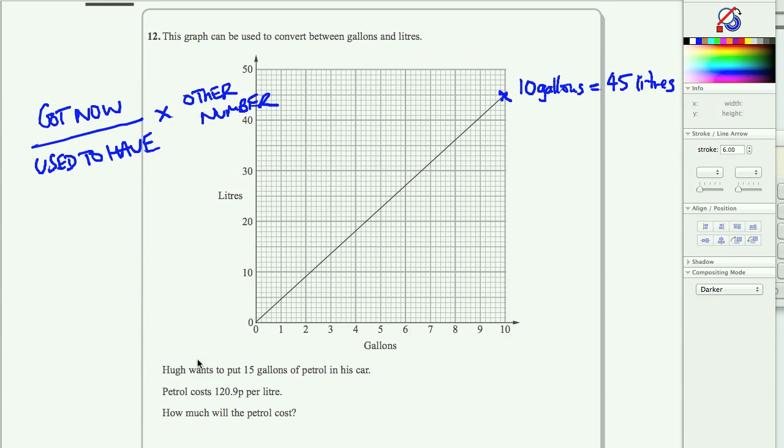So what have we got now? Hugh wants to put 15 gallons of petrol in his car. 15 gallons. We used to have 10 gallons on the exchange rate. Divide it by 10 gallons. And so we times it by the other number that relates to the 10 gallons, which is 45 litres.